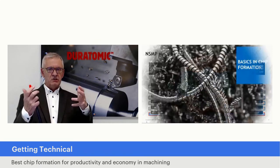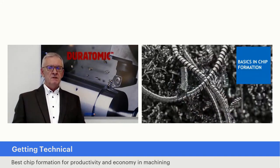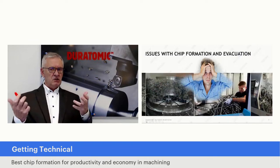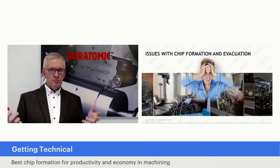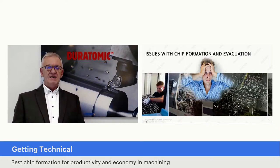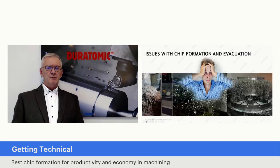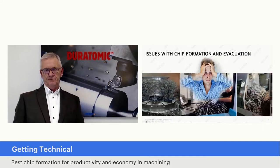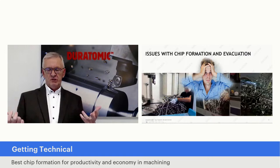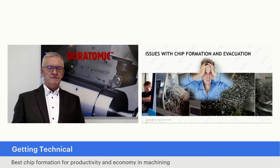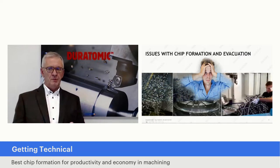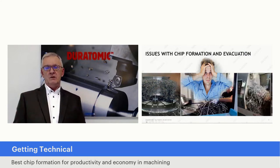Let's first have a look at the basics. If we look at chips, the next question we could ask is: does there exist something like a good chip or a bad chip or a preferred chip? And if we look around in a workshop, quite a lot of you will recognize situations — from a technical perspective, an operational perspective, or a human perspective — that are not exactly what you would like to see.